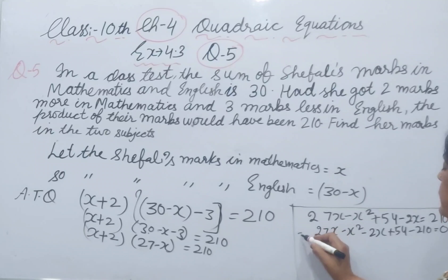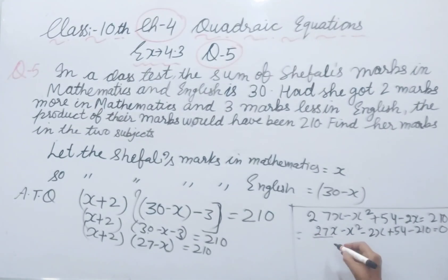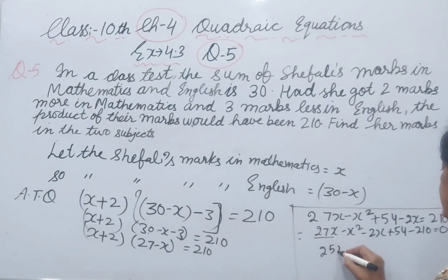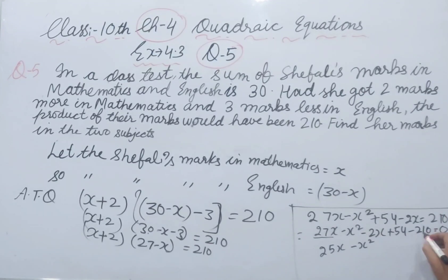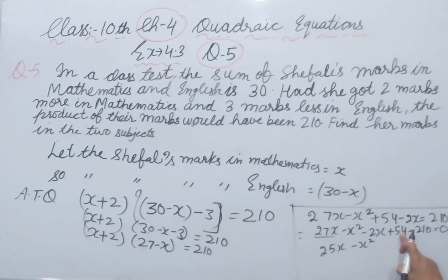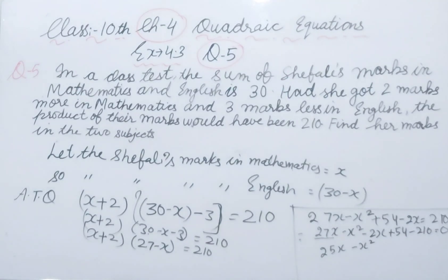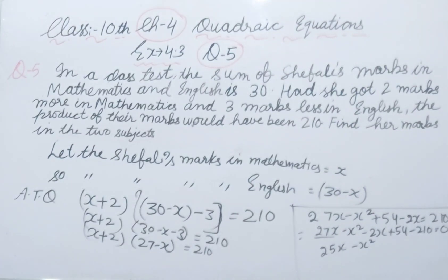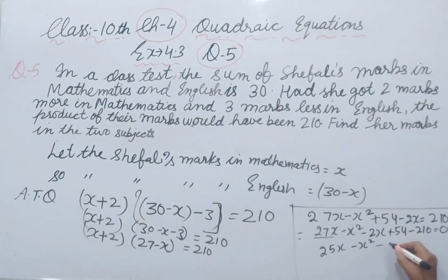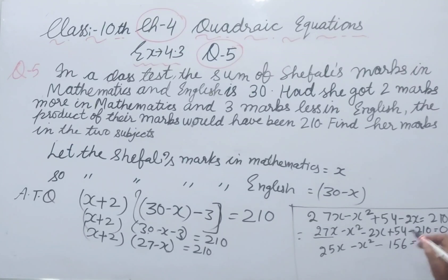Now 27x minus x squared minus 2x plus 54 minus 210 equals 0. 27 minus 2 is 25, so 25x minus x squared. 210 minus 54: when two signs are opposite, we subtract and the sign is the larger one, giving minus 156 equals 0.